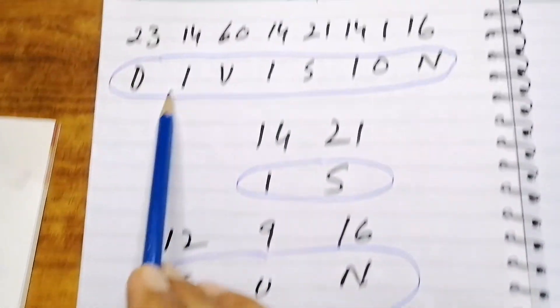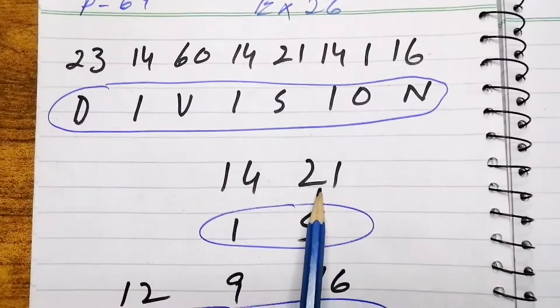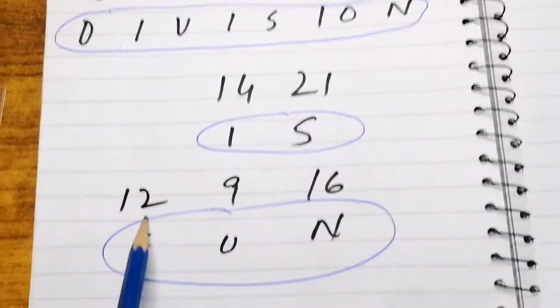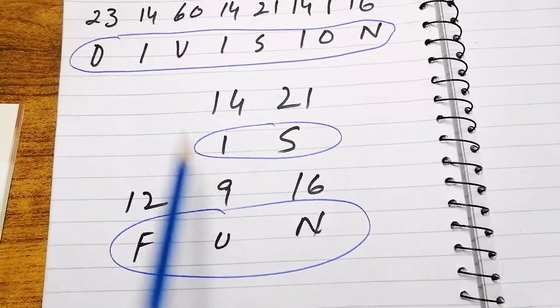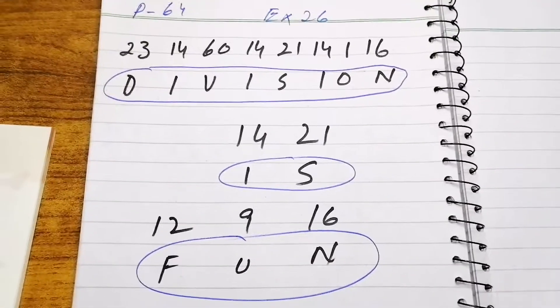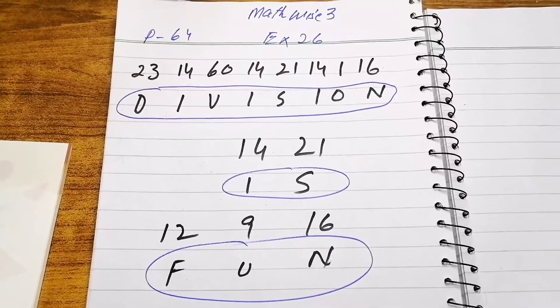Here I have written division, and then 14 and 21 is - 12 is I, 9 is S, 16 is fun. Division is fun. This is the secret code. That's all for today. Thank you very much.